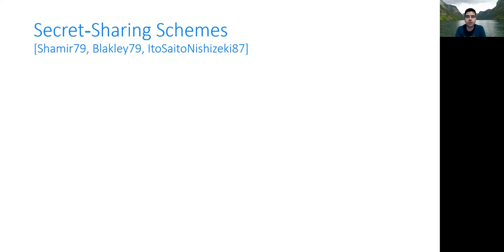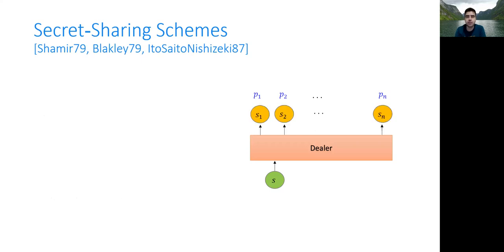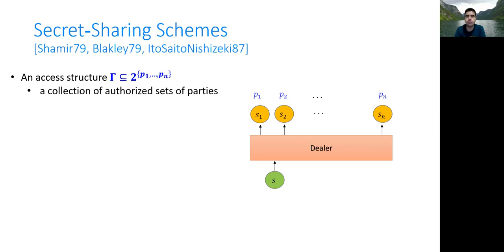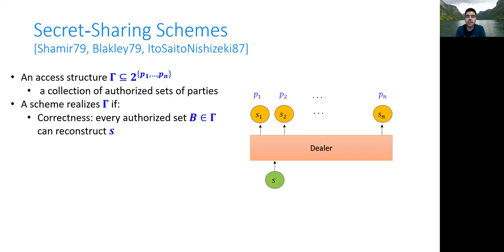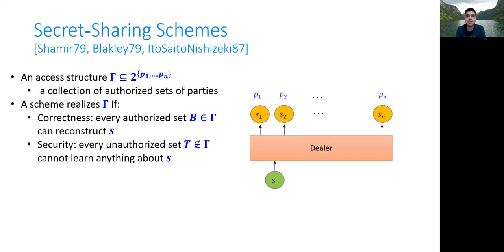Secret sharing schemes were defined independently by Shamir and Blakley in 1979 for the threshold case, and by Ito, Saito, and Nishizeki in 1987 for the general case. In secret sharing, there is a dealer who holds a secret S, and a set of n parties. The dealer applies a function on the secret S and some random string R, generates n shares, and gives each party a share. We define an access structure gamma as a collection of authorized sets of parties, and we say a secret sharing scheme realizes gamma if: for correctness, any set in gamma should learn the secret; and for security, any unauthorized set should learn nothing about the secret.